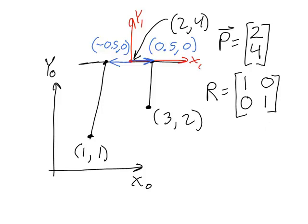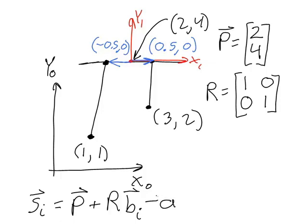Now that I have my variables all specified, I'm going to write down the equation for inverse kinematics. The vector Si — that is, the vector from the bottom of a joint to the top of the joint — is equal to the desired position of the center of the platform plus the rotation matrix times B, where B is the position where the joint is attached at the top of the platform in frame 1, minus the vector Ai, where Ai is the vector from the center of frame 0 to the location where the bottom of the joint is attached to the ground.